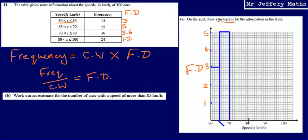Next one goes from 70 to 80. And that needs to go to a height of 3.6. You need to be a bit more careful about this one. So 3.1, 0.2, 0.3, 0.4, 0.5, 0.6. And then draw it across.